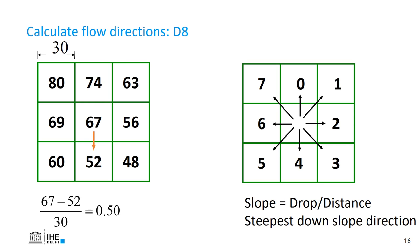Let's do the calculation. If we would consider the cell to the south — direction number 4 — the calculation will be 67 minus 52 divided by the distance 30, which equals 0.5. If we would consider the diagonal, the drop will be 67 minus 48, but the distance is not 30 anymore because we have to apply Pythagoras. The diagonal distance is longer than horizontal or vertical distance, therefore we use 30 times the square root of 2. This results in 0.45.